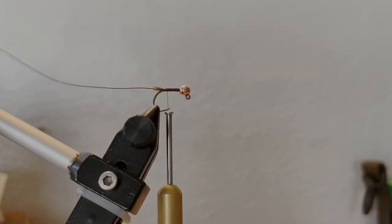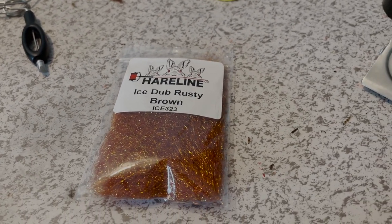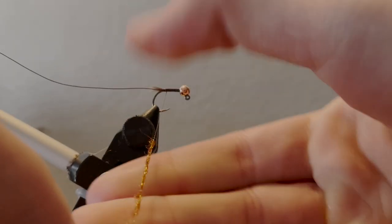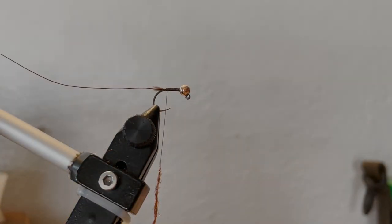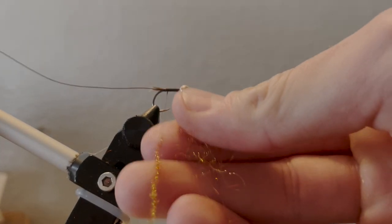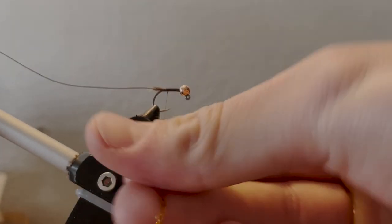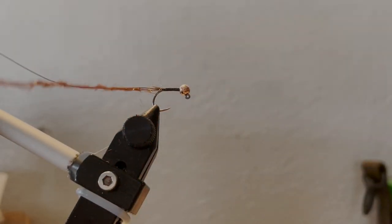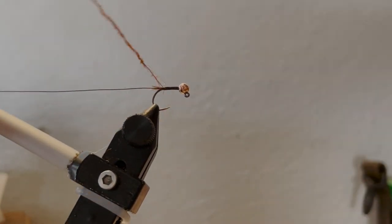Next, you'll want to grab some ice dub rusty brown and create a short dubbing noodle onto your thread. You'll want one about four inches probably. You can always take or add more, so don't worry too much about the length—just enough to make a body though.